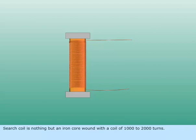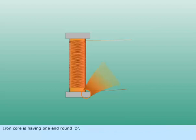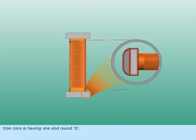Search coil is nothing but an iron core wound with a coil of 1000 to 2000 turns. Iron core is having one end round.